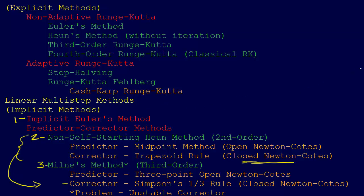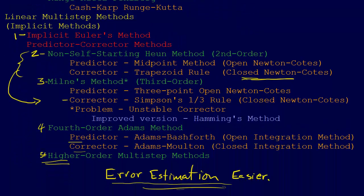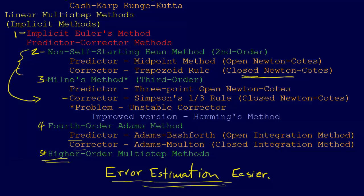So then we introduced these linear multi-step methods, which are all implicit methods. We had the implicit Euler method and then the predictor-corrector methods, and these are implicit because we're repeatedly iterating between this predictor, corrector, predictor, corrector.